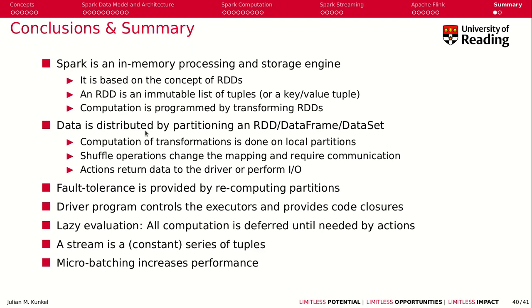Data is distributed in Spark by partitioning an RDD across nodes, CPUs, and slots according to YARN language. The computation of the transformations is done on local partitions of an RDD. Shuffle operations change the mapping so you can create multiple partitions from one, but they require communications.